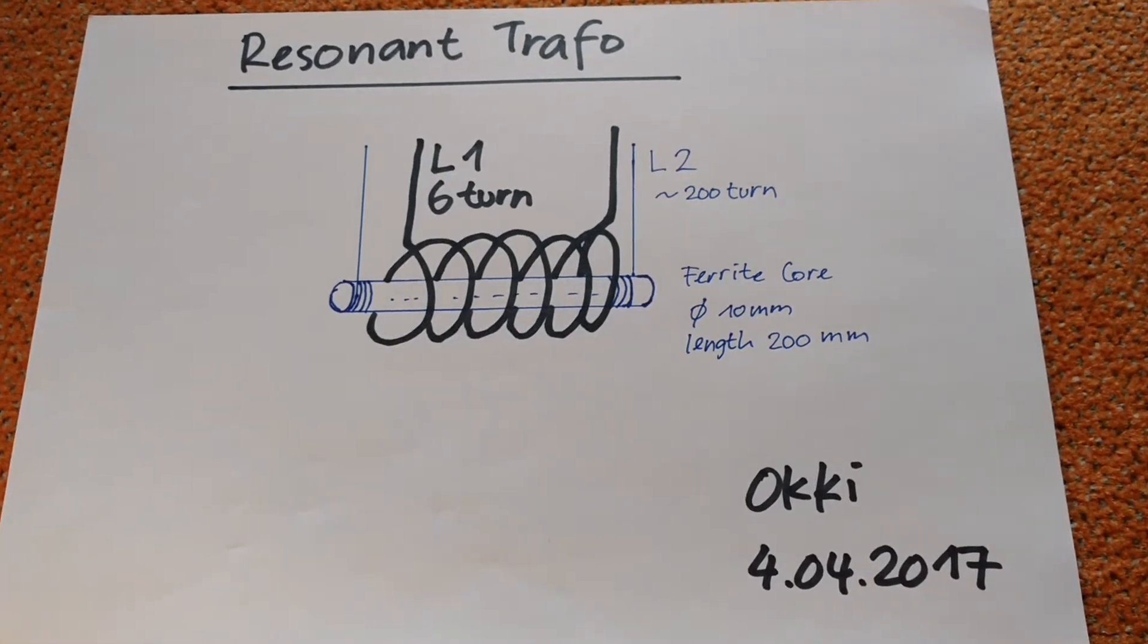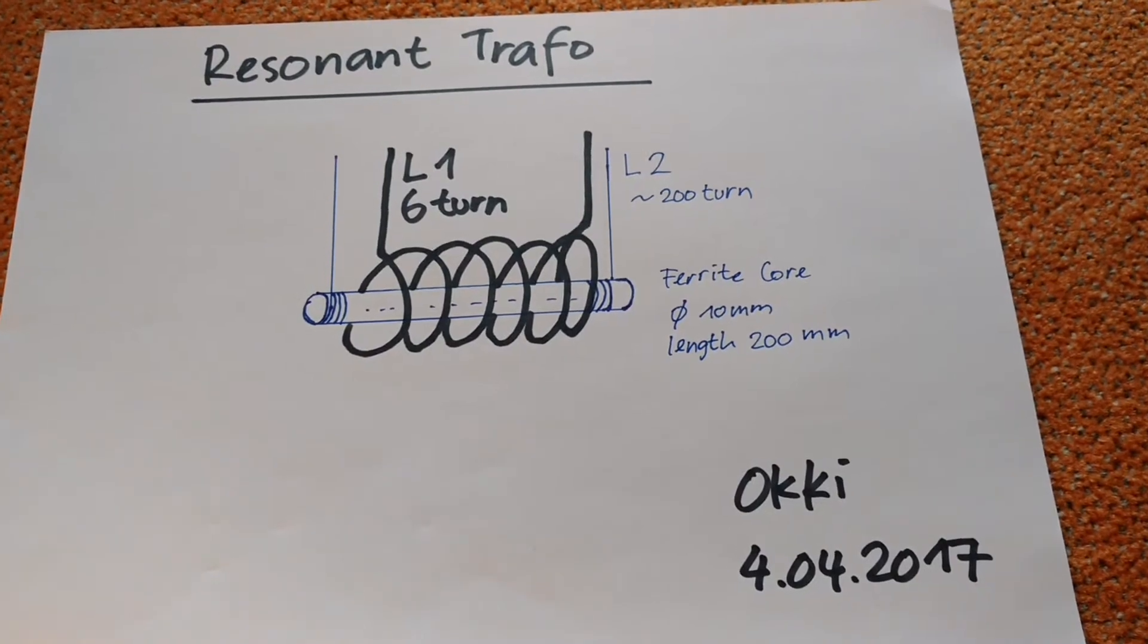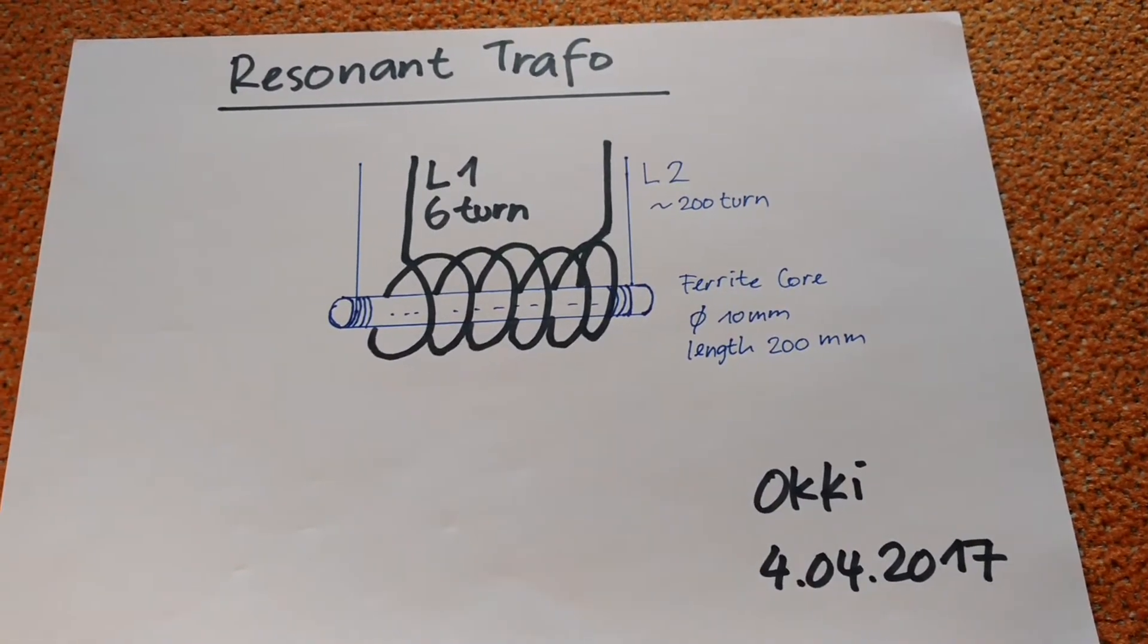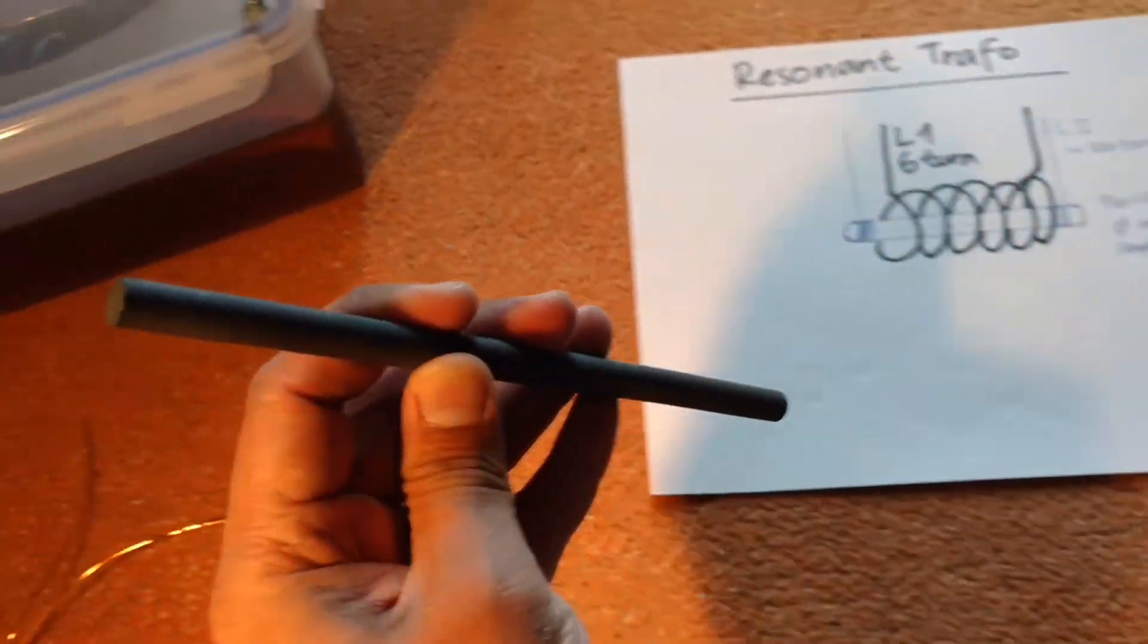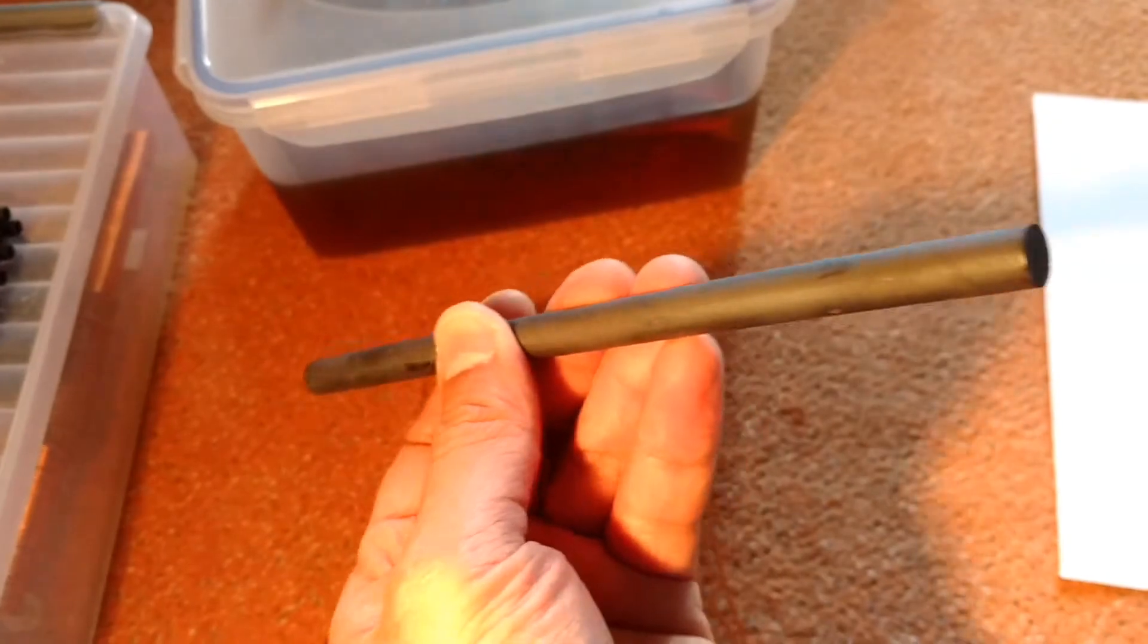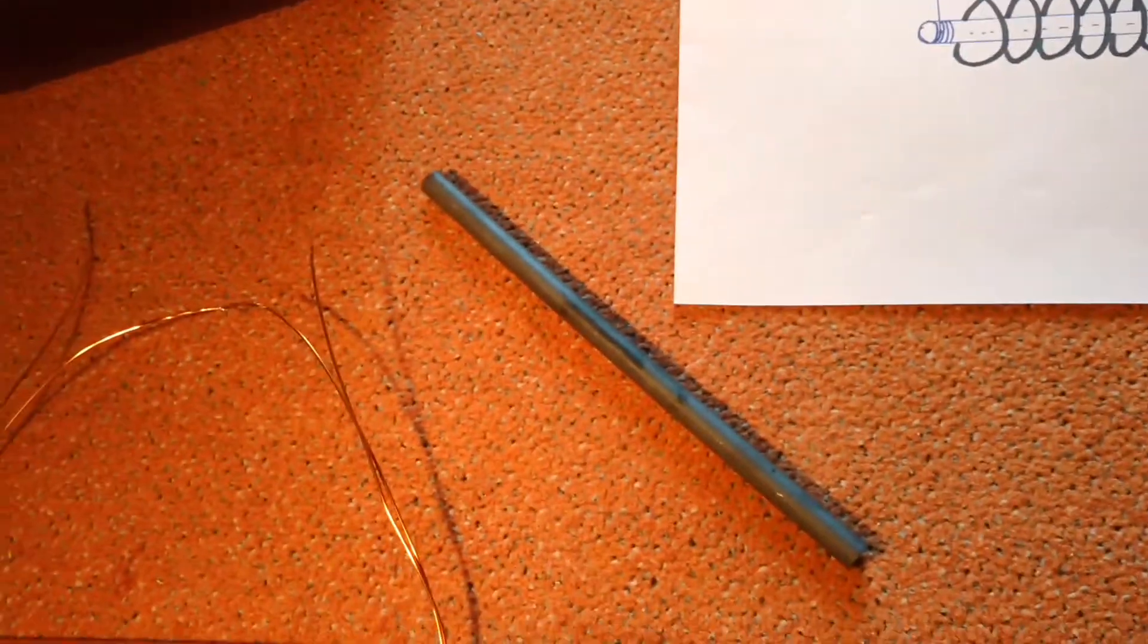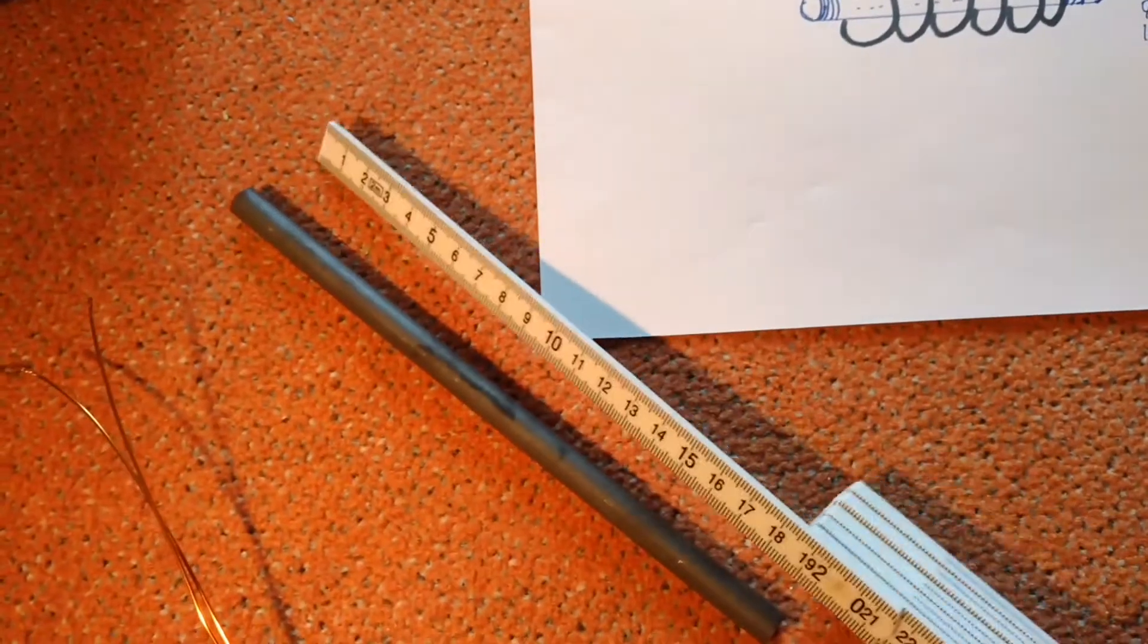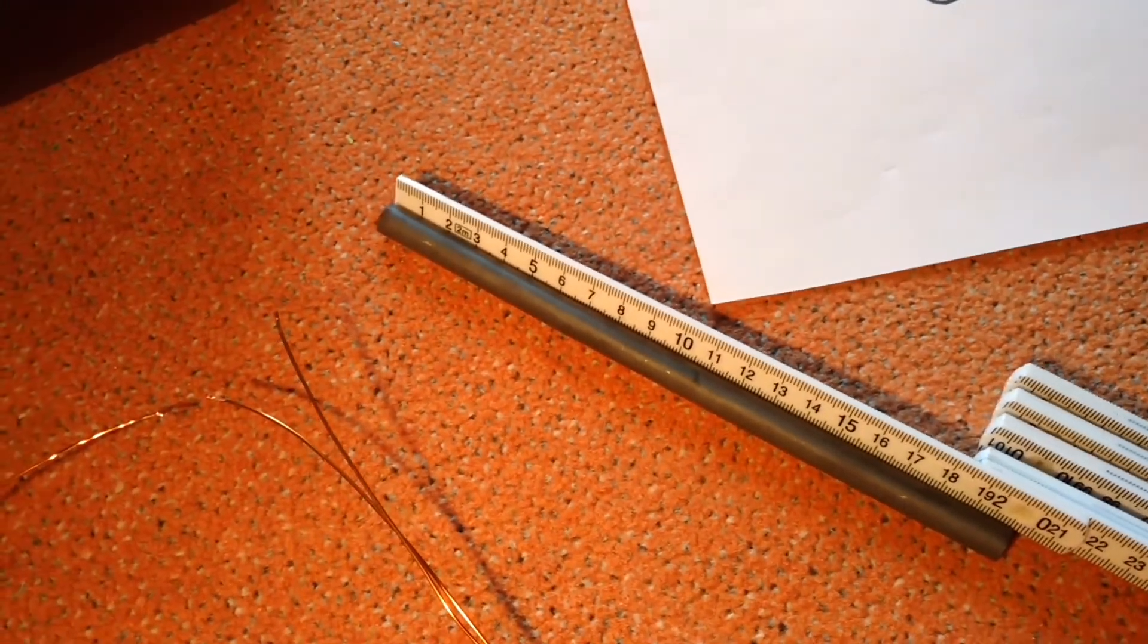And now I show you the actual components. Here is my ferrite core, it's 200 millimeter long, 10 millimeter diameter.